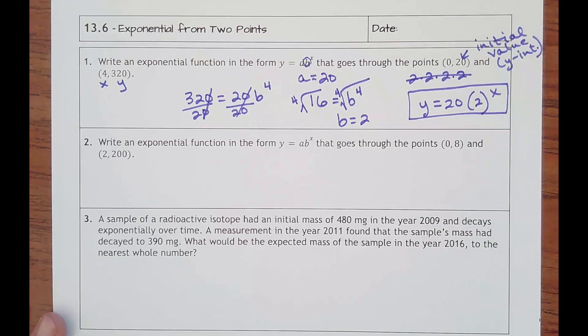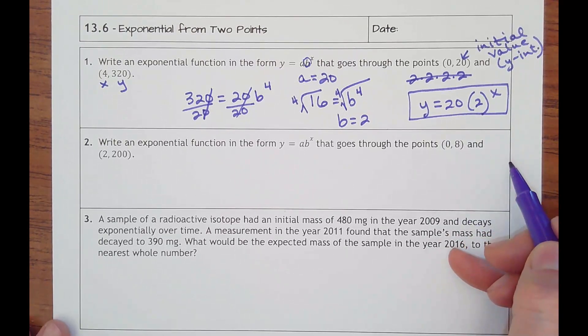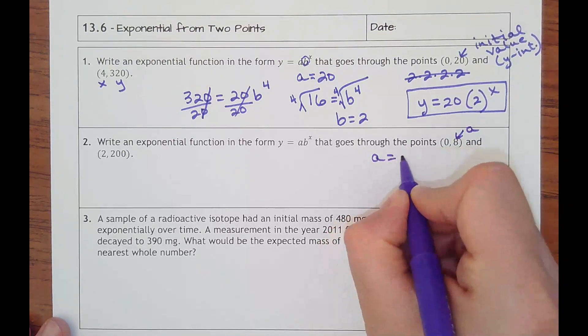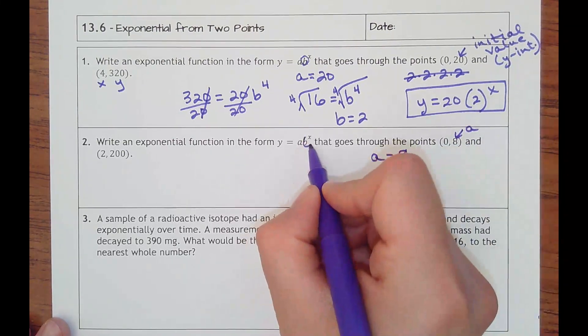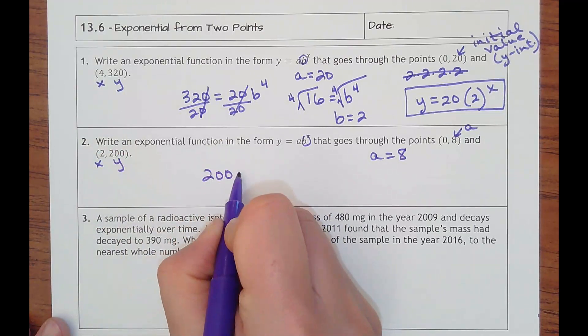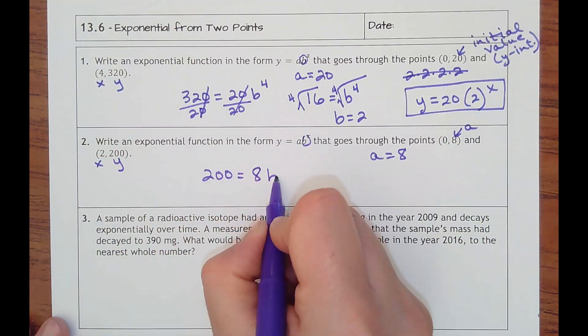Number 2 says write an exponential function in the form y equals a times b to the x that goes through the points (0, 8) and (2, 200). So again, this is my a, so a is going to be 8. I don't know what b is, but I'm going to find it by plugging in x is 2 and y is 200. So it'd be 200 equals 8 times b squared.